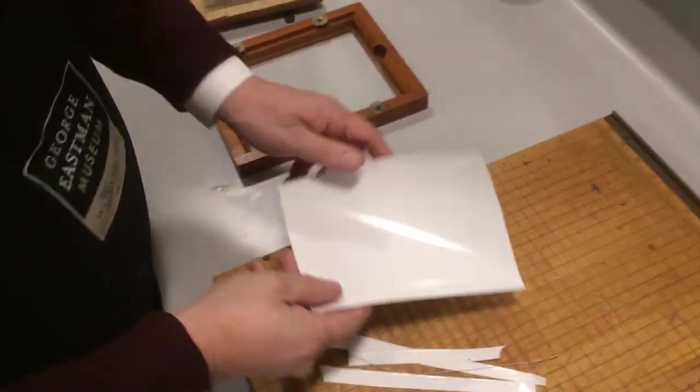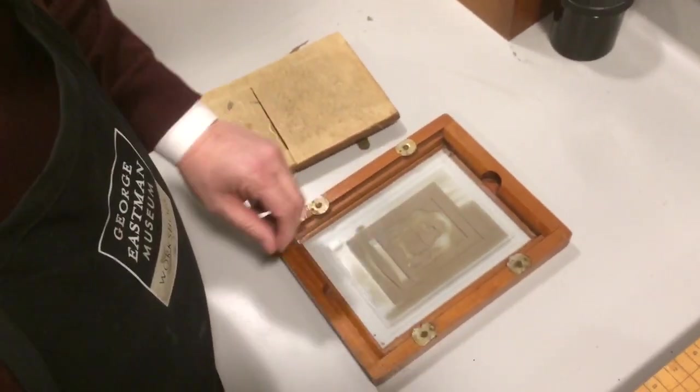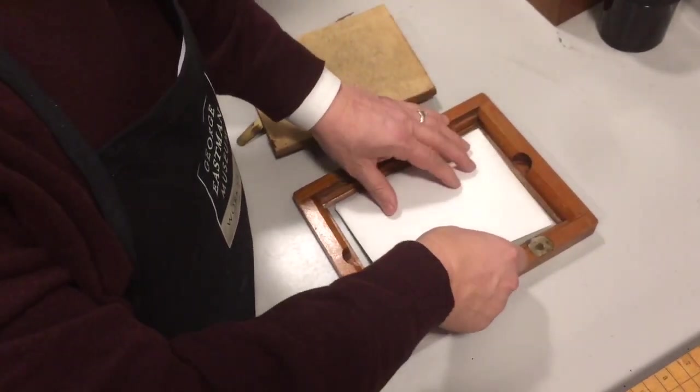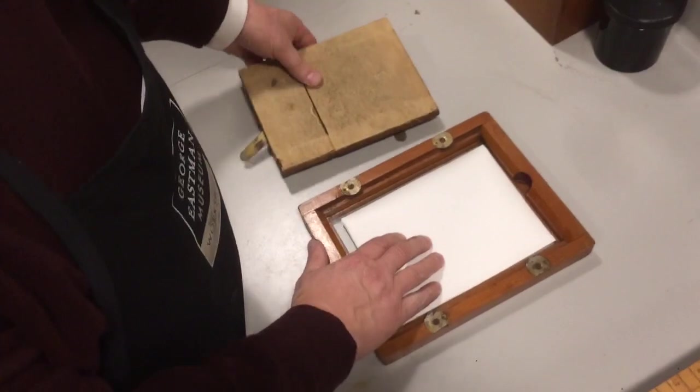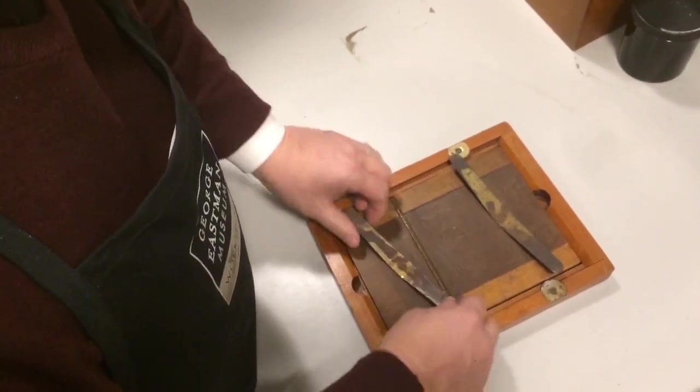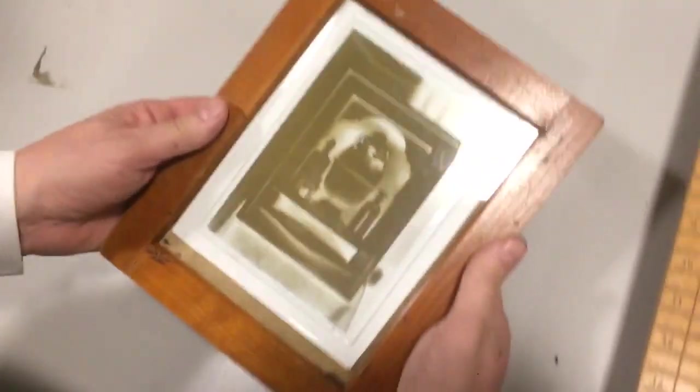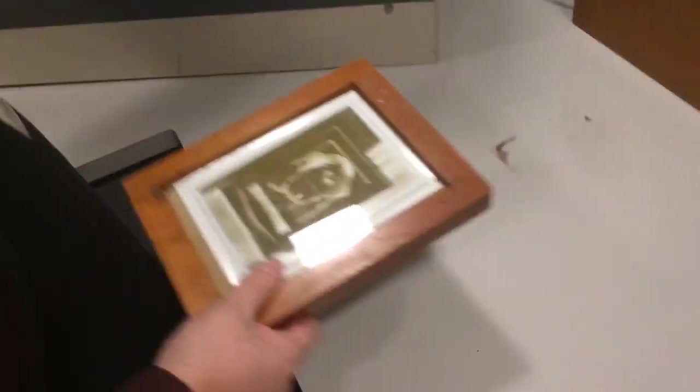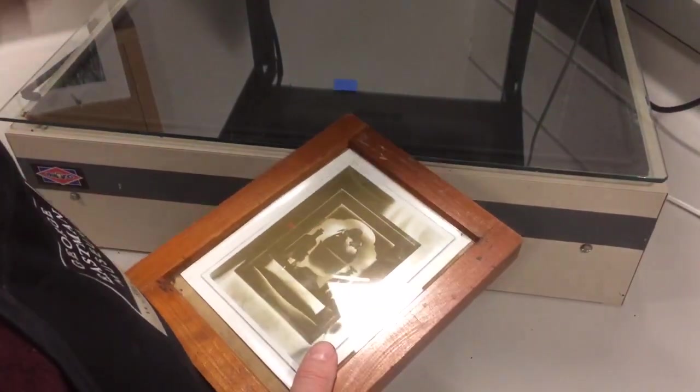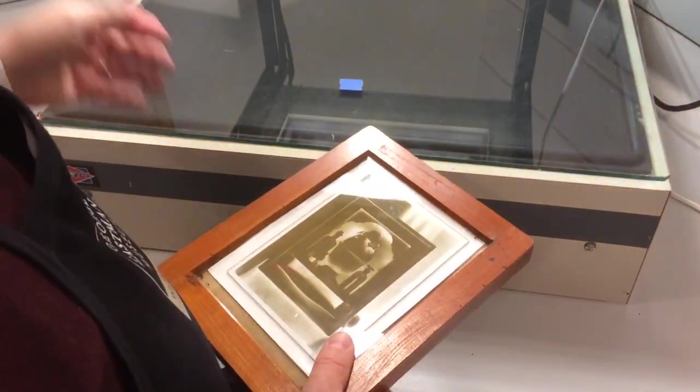Make a nice long cut. We'll put the negative in the printing frame. It's a wet collodion negative. It's image side up and the paper is sensitive side down. Put it into the printing frame. There we go. So we'll put this in.